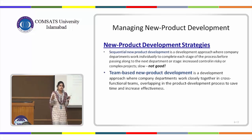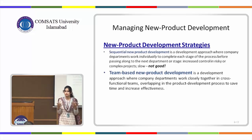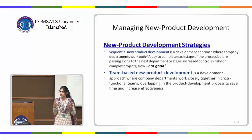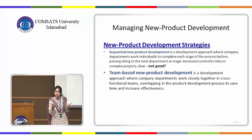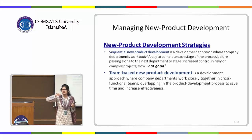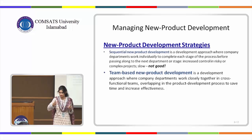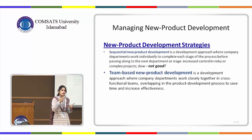Team-based new product development is very similar to the concept of matrix organization. A matrix organization is a type of organization that encourages employee input whereby you include people from various departments. They work together on a single project, and the defining feature of the matrix structure is that there is double reporting.